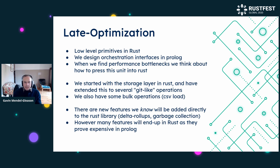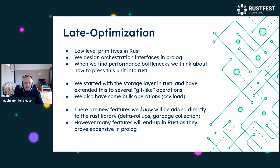There are features we know we're going to add directly to the Rust library — they generally have to do with low-level manipulation, and it would be silly to even prototype them in Prolog. However, there are a lot of features we expect will end up in Rust as we move forward — it's going to be a slow replacement strategy. It's not clear we will ever replace all of Prolog, although we may. Even in the asymptotic future, we can imagine that probably some of the schema checking will still be done in Prolog, perhaps embedded in Rust or using Scryer Prolog or something along those lines.